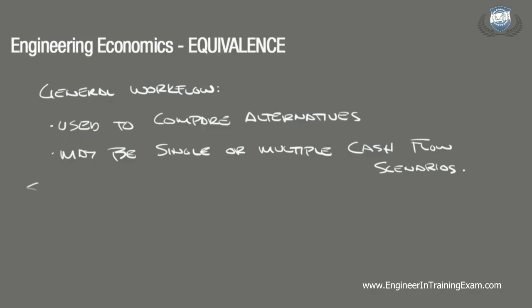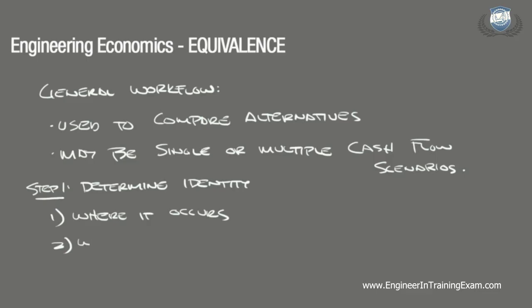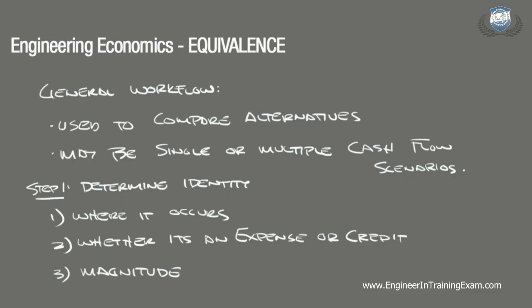Our first step to solving an equivalence problem is to determine the identity of each transaction in the cash flow distribution. For each transaction we need to define: number one, where it occurs in the lifespan of the distribution; number two, whether it is an expense or credit — they could be called disbursements, payments, revenues, etc., but they are all a plus or minus; and number three, the magnitude. In the most elementary form, the analysis of these alternatives can be summarized in a simple table.